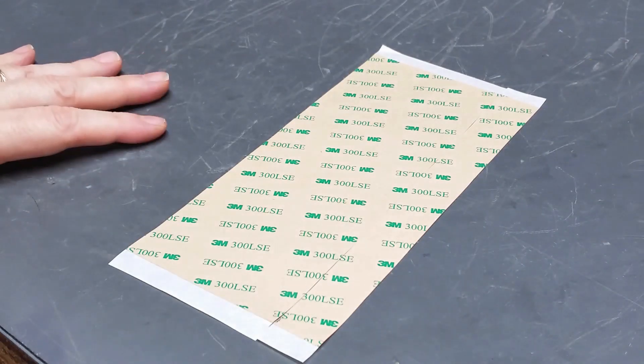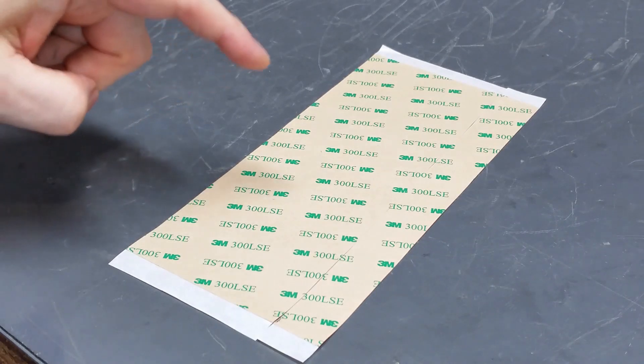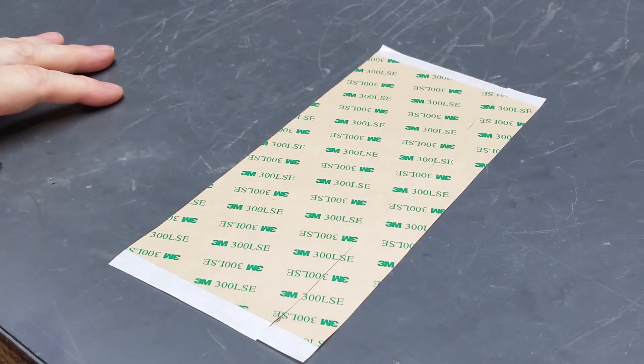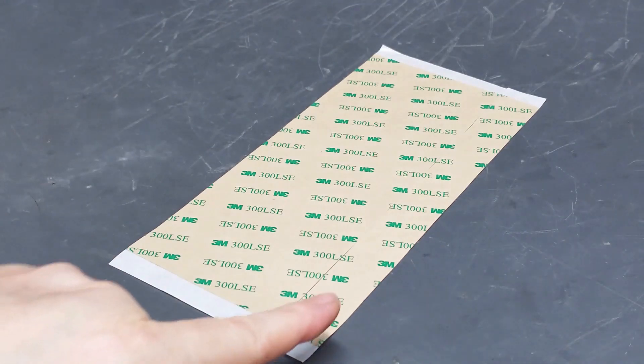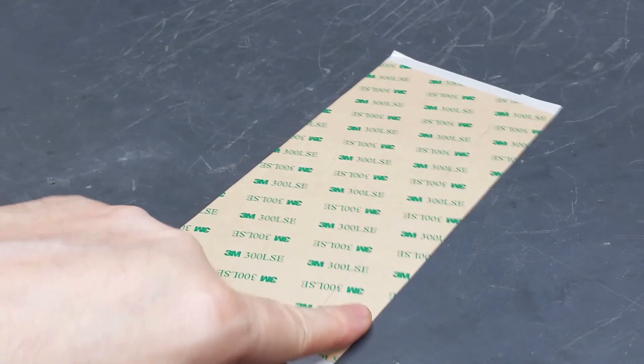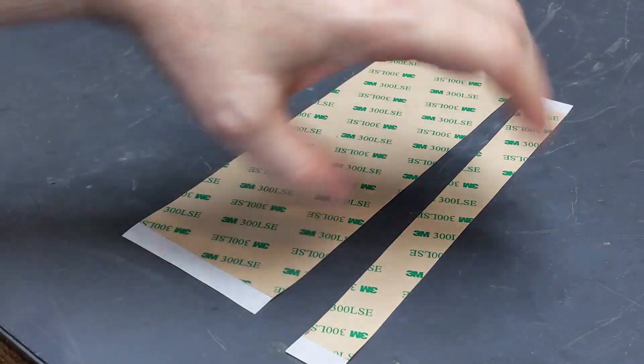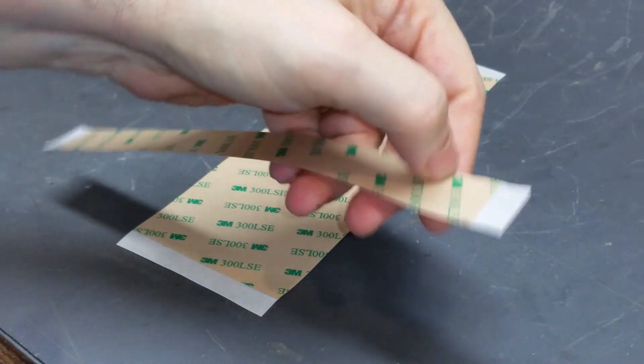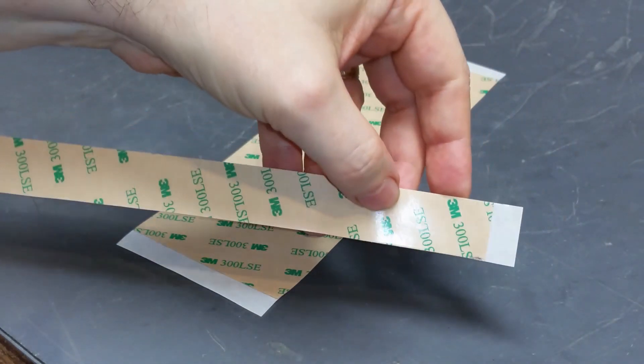I have here a sheet of 3M 300 LSE adhesive. This is something that I picked up on Amazon. What I've done is I've cut off a piece just a little bit wider than three quarters of an inch, because we're going to need to punch some three quarter inch circles, three quarter inch or 19 millimeter.